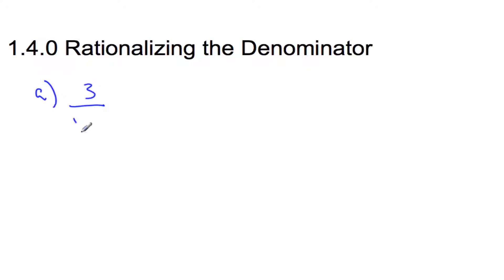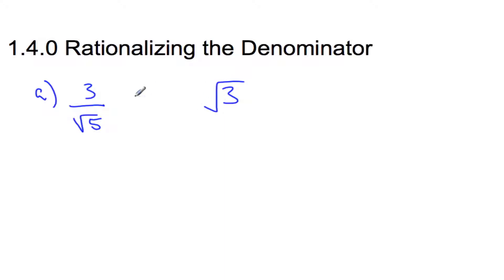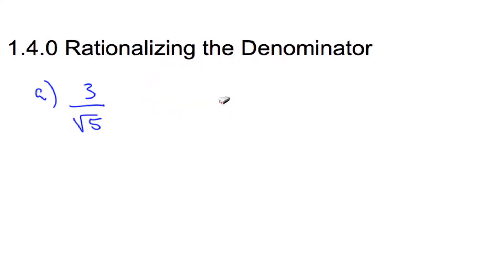If I had 3 over square root 5, and I'm back in the 1400s without a calculator, this means I would have to go 3 divided by 2 point blah blah blah — a great big giant long decimal. That would be really hard to do. So people didn't like to divide with decimals; what they would prefer to do is multiply.